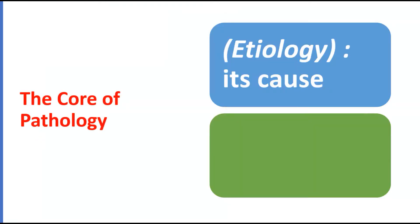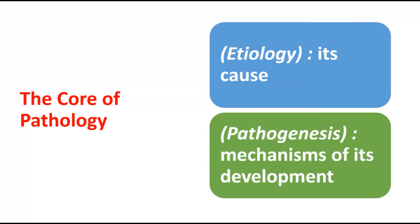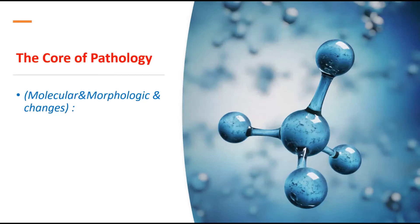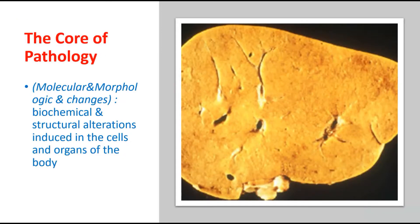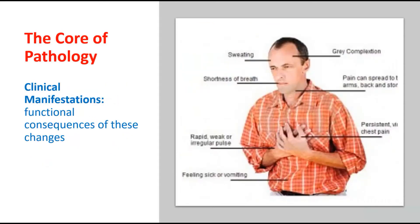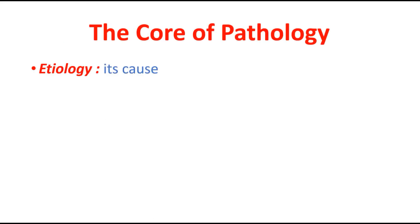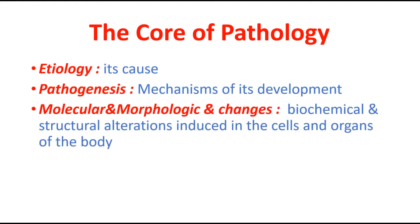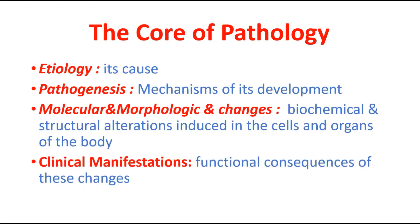The core of pathology includes: number one, etiology — the cause of the disease; then pathogenesis — the mechanism of its development; then molecular and morphological changes in cells and tissues; then biochemical and structural alterations in cells and organs; and finally, the clinical manifestations and functional consequences of each disease.